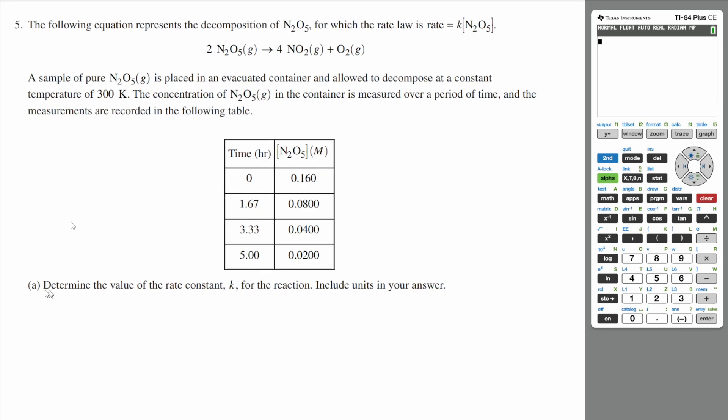So we have a table. Determine the value of the rate constant k for the reaction and include units in your answer. One of the ways that we could go about doing this is using our integrated rate law. If you look at your rate law, rate is equal to k times the concentration of N2O5, and this will have an overall rate order of first order. This is a first order kinetics problem.